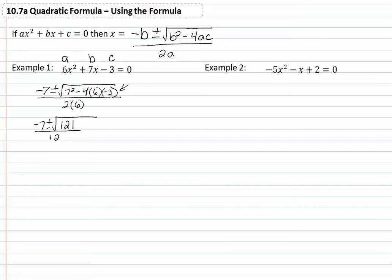Since we can take the square root of 121, we want to simplify that. So we now have (-7 ± 11) / 12.